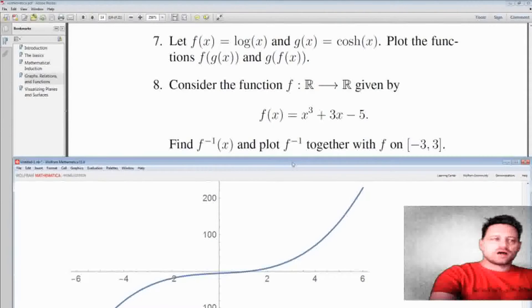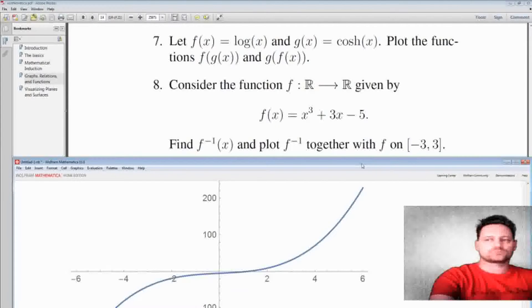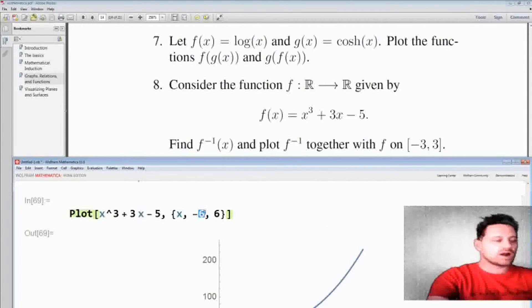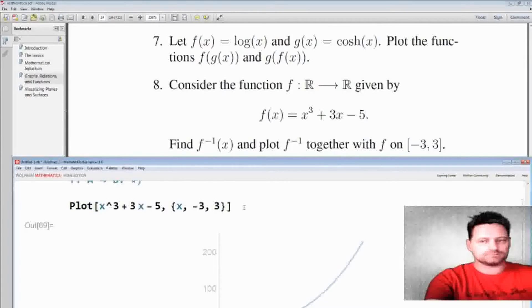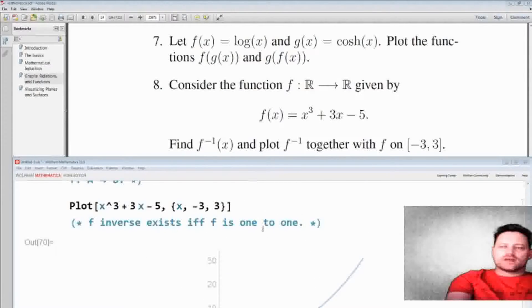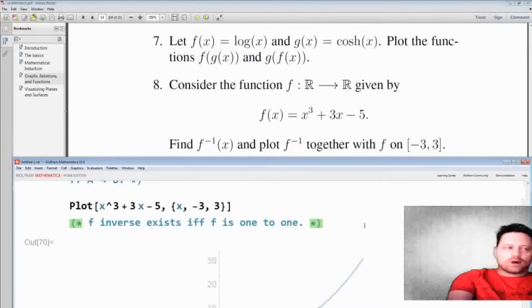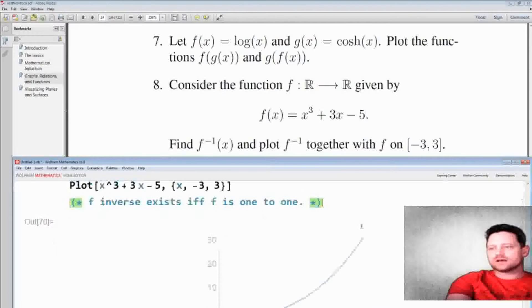Now next this says find f inverse. Find the inverse of f and then plot the inverse of f together with f on the domain from minus 3 to 3. We've already plotted f from minus 6 to 6, so why don't we just change the plot range to minus 3 to 3. The inverse of f exists if and only if f is a 1 to 1 function. Now how do we decide whether or not a function is 1 to 1? If it passes the horizontal line test, then it's 1 to 1. But there is a theoretical way of deciding this.